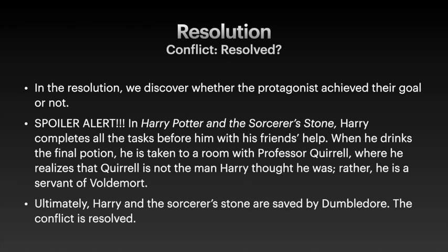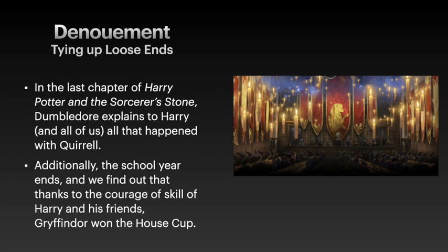The next step is the denouement, and honestly resolution and denouement are often kind of lumped together or confused. But the resolution is the resolving of the conflict, whereas the denouement is just kind of like cleaning up the messy stuff after — tying up the loose ends. So in the last chapter of Harry Potter and the Sorcerer's Stone, after Harry's rescued by Dumbledore, there's a whole explanation of what happened with Quirrell and how he became Voldemort's servant, and why he wanted the stone. Dumbledore explains to Harry, and all of us as readers or viewers of the movie, everything that happened. So that's not really the resolution in and of itself — it's more like tying up the loose ends afterward, which is what the denouement is.